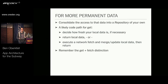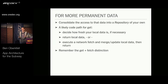For more permanent data, you might want to consolidate access into your own repository interface. A likely code path would be: decide how fresh your local data is, return that value, execute a network fetch, merge the local data, and give it back. The get and fetch distinction is important because if you're coming up offline, you don't want to fetch and get nothing. For example, the list of puzzles in our archive screen with all your past progress is not ephemeral data — we fetch your progress, merge with local data, and figure out whether the backend thinks you're further along than we think locally, without stomping on unsaved local progress.